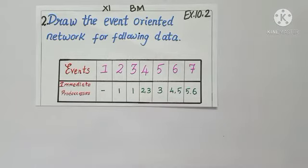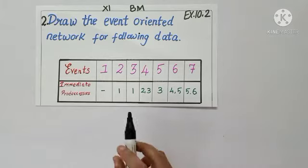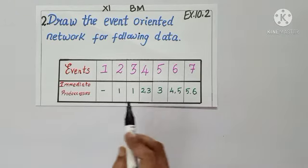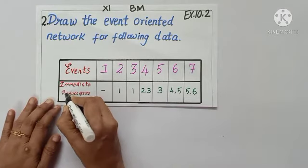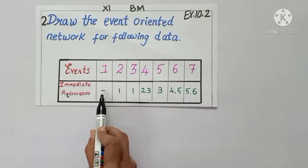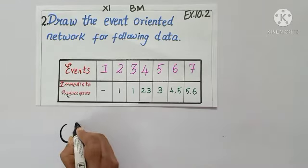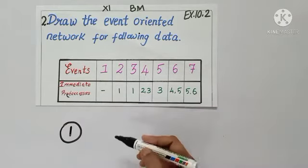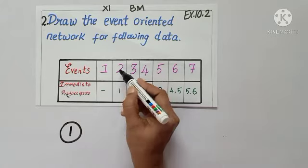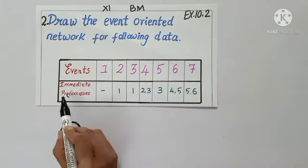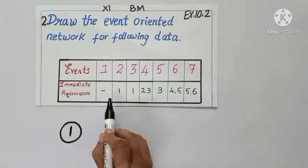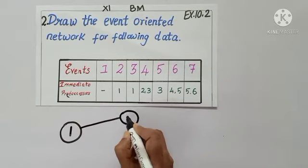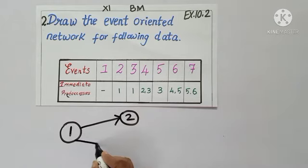Question number 2: Draw the event-oriented network for the following data. Here, activities are not given — we need to just mark the events. Only numbers are given, so we are given the predecessors. Before event 1 there is nothing, so event 1 is the starting event. After 1, I have event 2 and event 3.